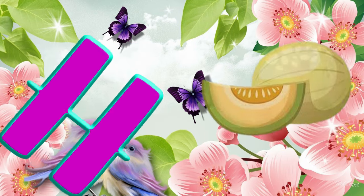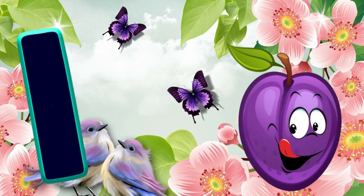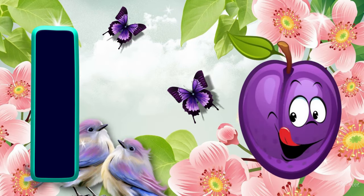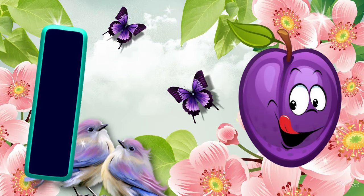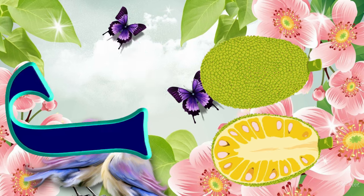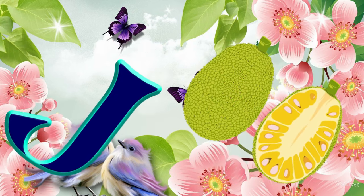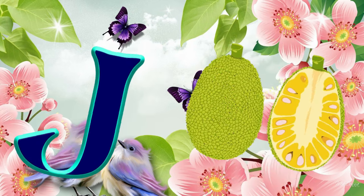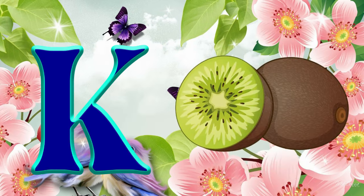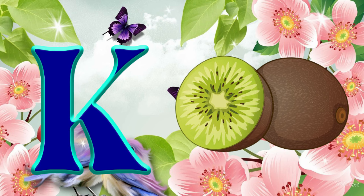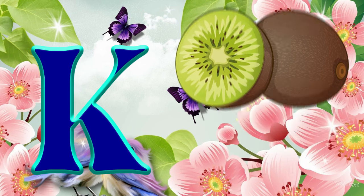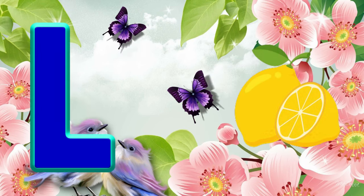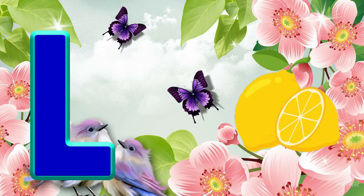I is for Indian Prune. I. Indian Prune. J is for Jackfruit. J. Jackfruit. K is for Kiwi Fruit. K. Kiwi Fruit. L is for Lemon. L. Lemon.